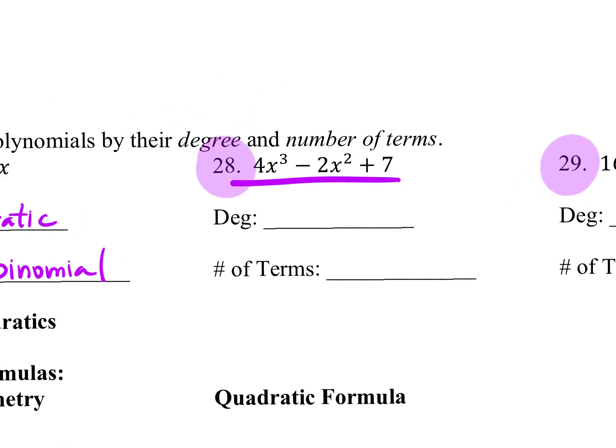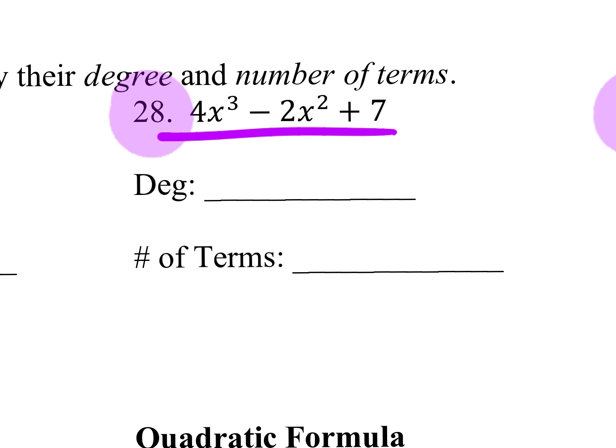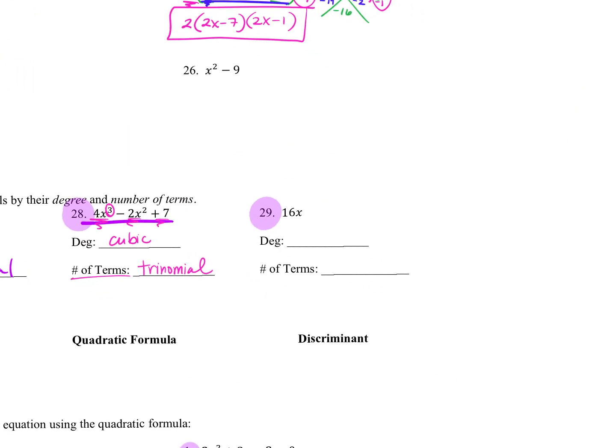What is the degree of number 28? It's a 3, so it's called a cubic. And then your number of terms is also 3. What's that called? Trinomial. With 3, it's a trinomial. 1, 2, 3. Tricycle has 3 wheels, right? Trinomial.